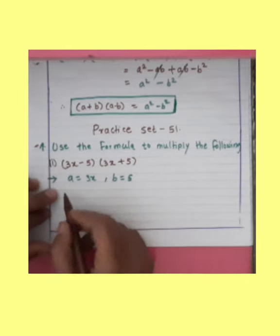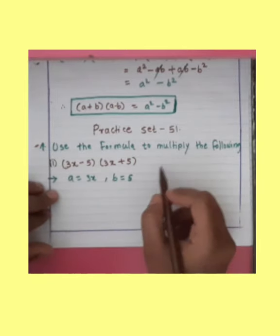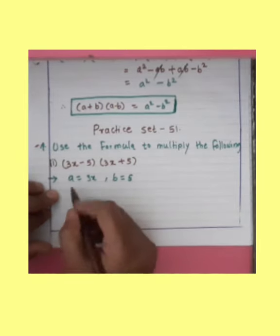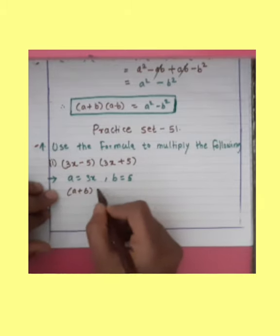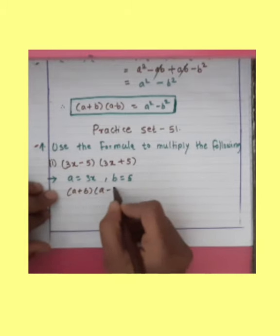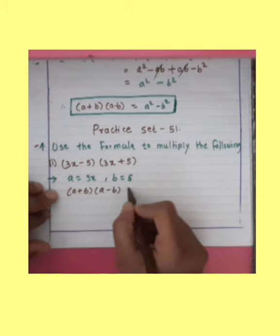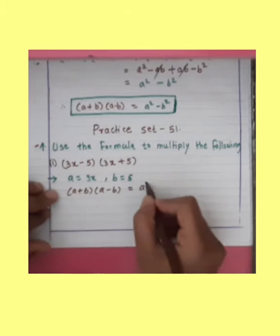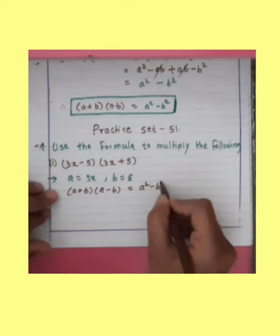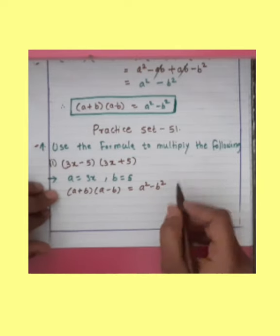So A square minus B square. A plus B into another bracket A minus B is equal to A square minus B square.